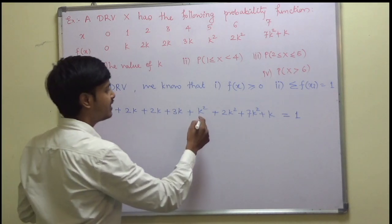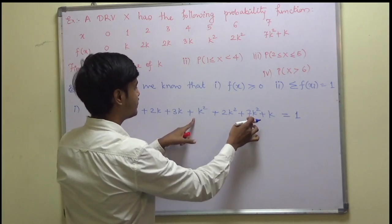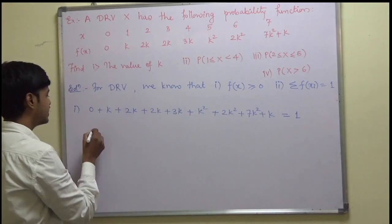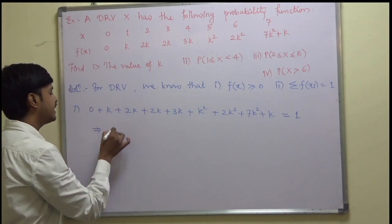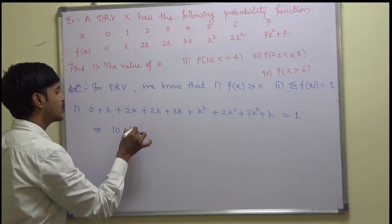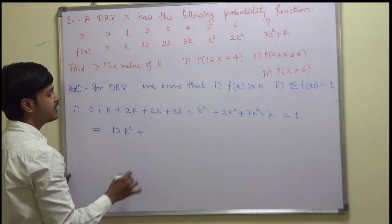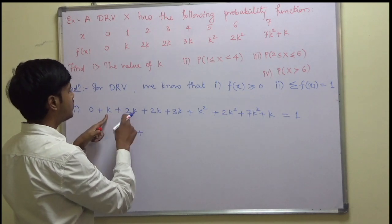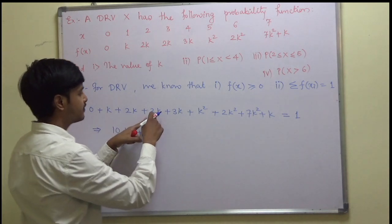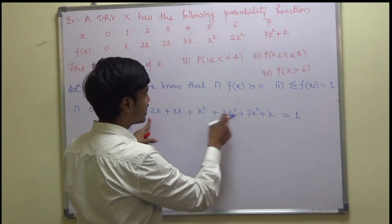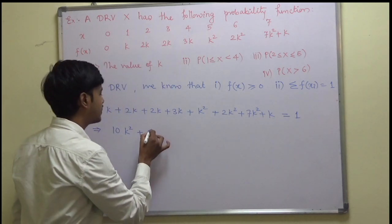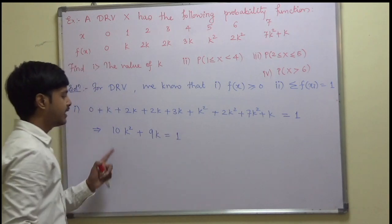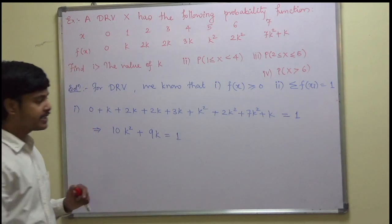Let me collect the k² terms first: 7k² + 2k² + 1k² = 10k². Now counting the k terms: 1k, 2k, 3k counting to give 9k total. So we get 10k² + 9k = 1.